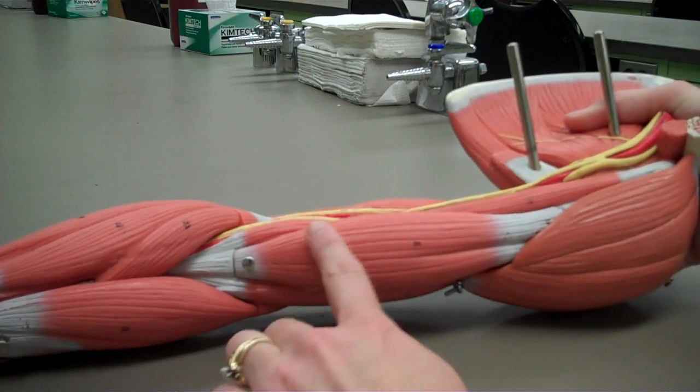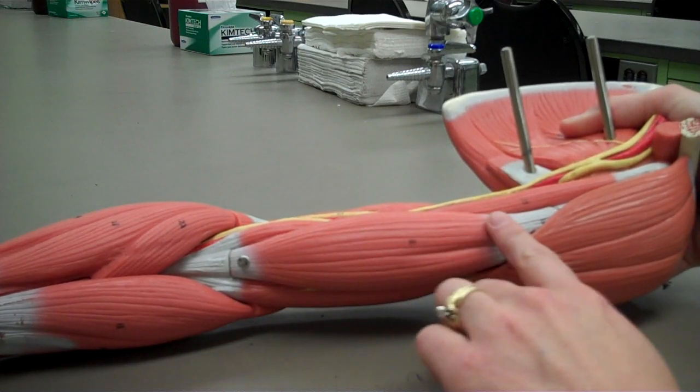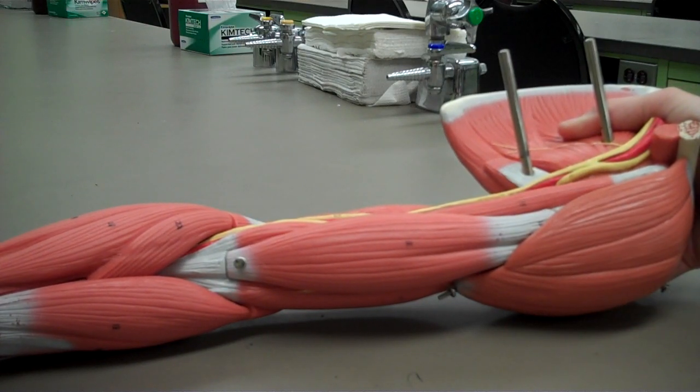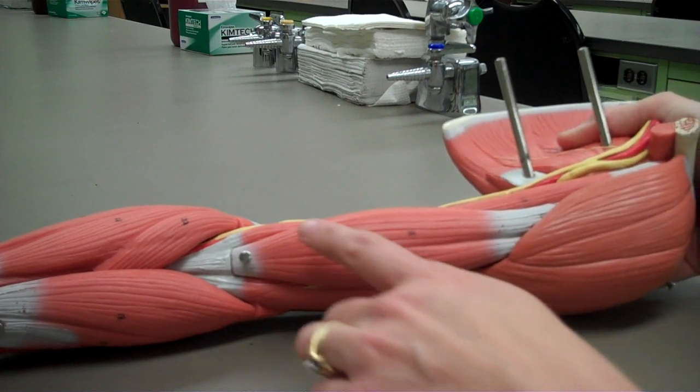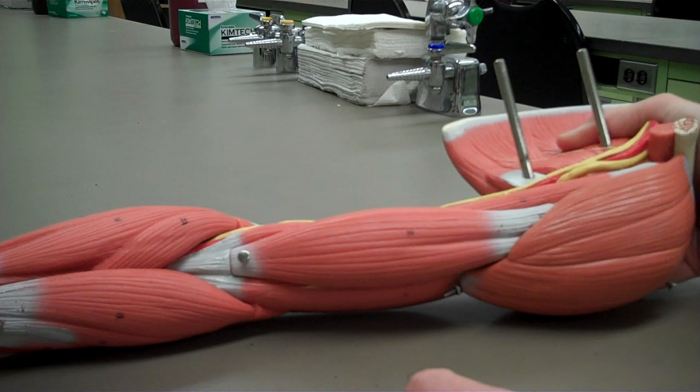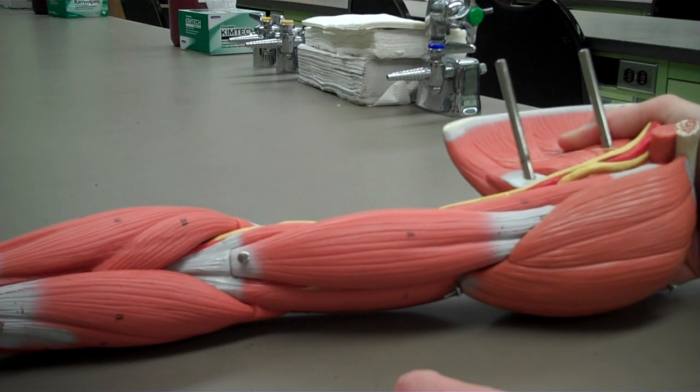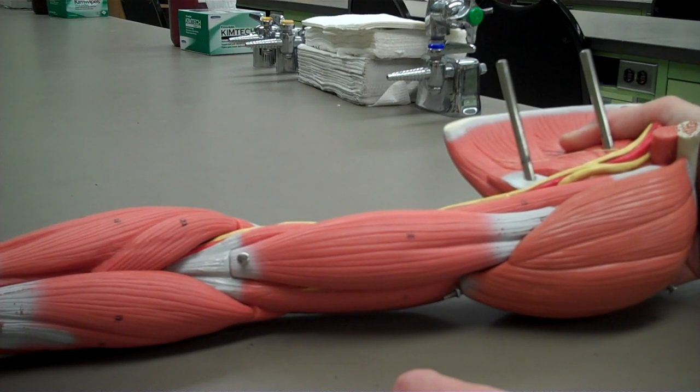The first muscle I'd like to show you is the biceps brachii. Its origin is on the coracoid process and supraglenoid tubercle. Its insertion is on the radial tuberosity. Its action is to flex the elbow, and it supinates the forearm.